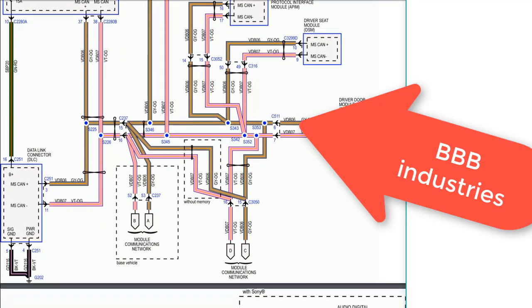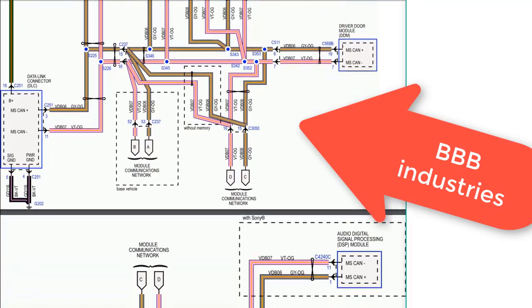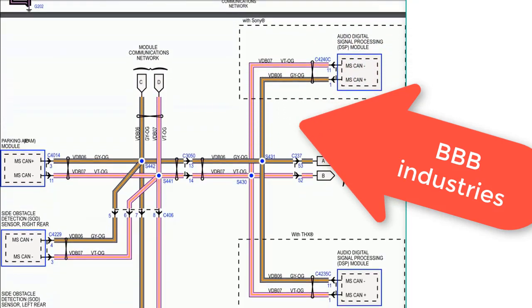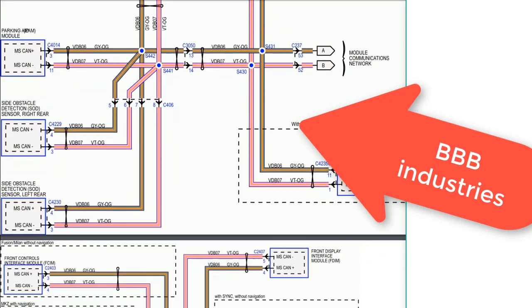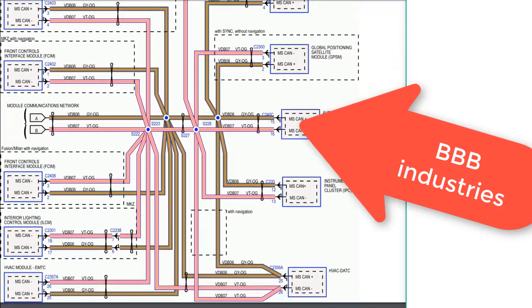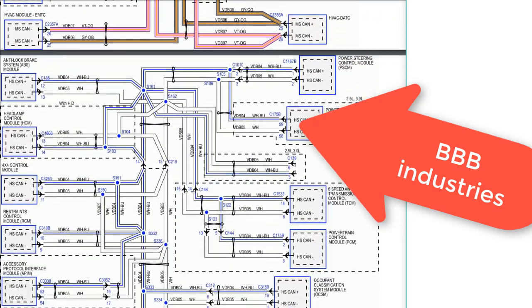You're going to need a wiring diagram for your vehicle that shows the connections of all these modules on the CAN bus. BBB Industries is a good resource for do-it-yourself mechanics to download these diagrams and print them out.